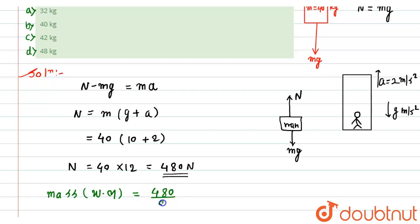480 divided by g. This answer we have to divide it by g so that we get the actual weight of the man in the weighing machine according to the weighing machine. So it would become equal to, very simple,